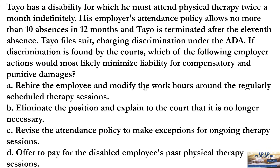Teo has a disability for which he must attend physical therapy twice a month, indefinitely. His employer's attendance policy allows no more than 10 absences in 12 months, and Teo is terminated after the 11th absence. Teo files suit, charging discrimination under the ADA. If discrimination is found by the courts, which of the following employer actions would most likely minimize liability for compensatory and punitive damages?